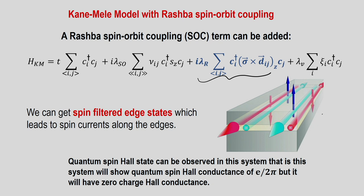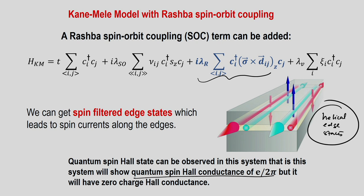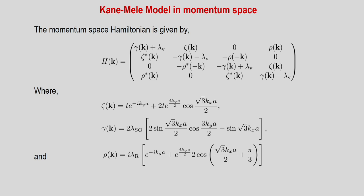The quantum spin Hall effect can be observed in this system, giving a spin Hall conductance of e/2π but zero charge Hall conductance, since breaking time reversal symmetry is required for the charge Hall effect. This is the full tight-binding Kane-Mele Hamiltonian in momentum space: diagonal terms include second-neighbor hopping and on-site potential; off-diagonal terms represent nearest-neighbor kinetic energy.